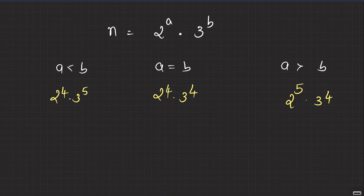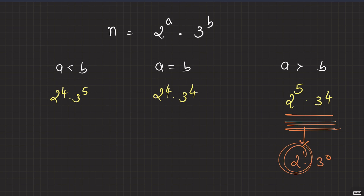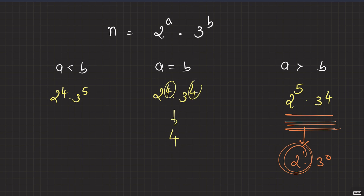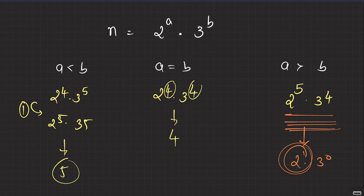Can we make n equal to 1? If the power of 2 is greater than the power of 3, you won't be able to make this 1, because after some time all the powers of 3 will be exhausted and you'll be left with some power of 2 with no way to divide by 6 anymore — a dead end. If the powers are equal, just apply that many operations and you're done. If 2's power is less than 3's, first match the powers by multiplying by 2 — one operation per difference — then divide by 6 that many times. So the answer only exists if a ≤ b.